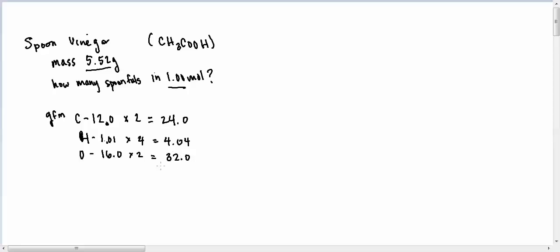Then I add that all up and I end up getting 24 plus 4 plus 32 equals 60.04. But remember, I only keep the smallest, the least accurate measurement, which ends at the tenth place, so I'm going to throw that out and I end up getting 60.0. So apparently there are 60.0 grams in one mole of this substance.